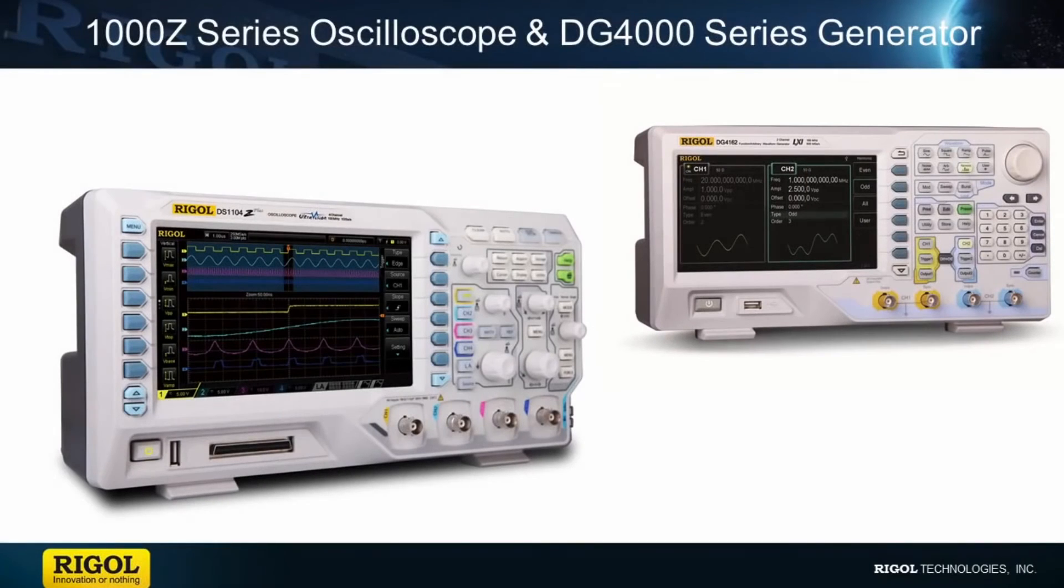In that test, we used the DG4000 waveform generator to create our signals, and we analyzed them with the 1000z series oscilloscope. We used the deep memory FFT capabilities of the 1000z scope to show better signal quality of our frequency domain analysis of our signals. The 1000z series oscilloscope makes a great analysis tool for your lab or bench.